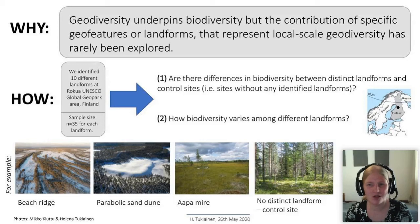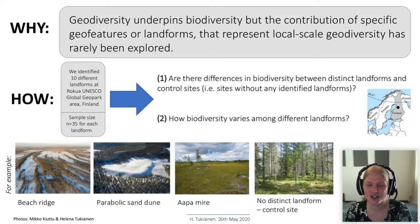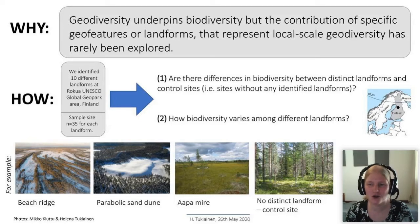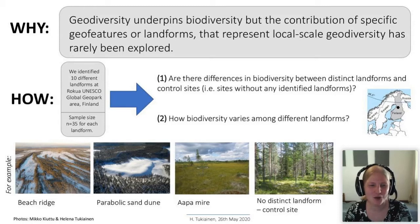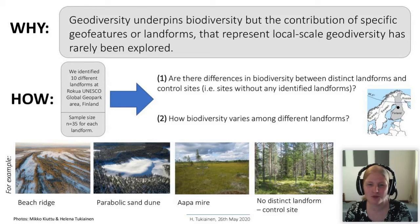So how did we study the meaning of landforms for biodiversity? We identified landforms in the area of Rokua UNESCO Global Geopark in Finland in Northern Europe, as shown on the map. We identified 10 landforms in the study area formed by different earth surface processes, with a sample size of 35 for each landform. For instance, we identified beach ridges, parabolic sand dunes, and aapa mires. Note that the white material in the figures is snow, not sand. We also included 35 plots with no identified landforms as control data.